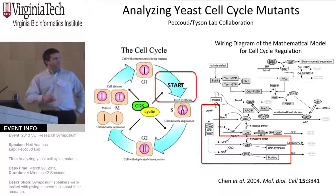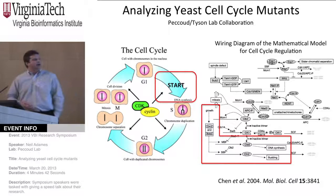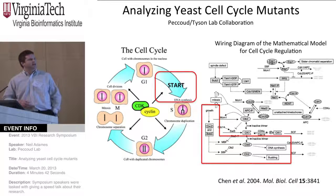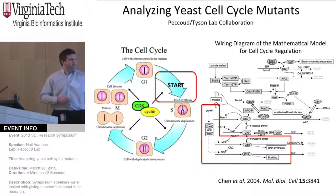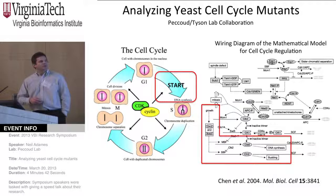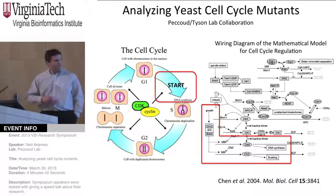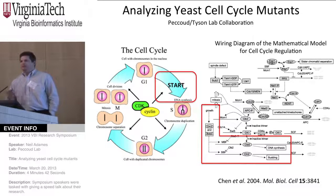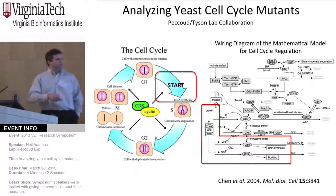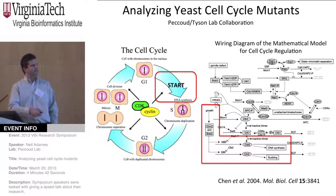The 2004 model is shown here. The main justification for this is that there are lots of mathematical models for biological systems and processes, and they all involve a variety of different formats. For example, they can be Boolean or use ordinary differential equations, which is the one that the Tyson Lab uses.